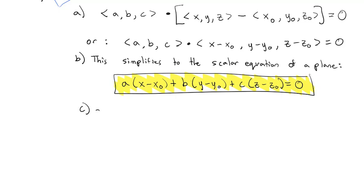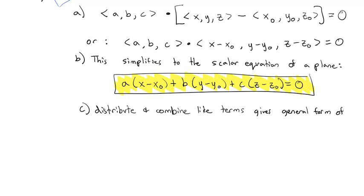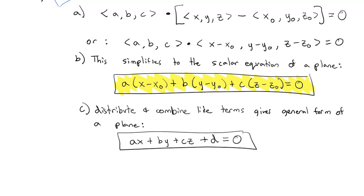Now, I could go one step further and distribute and combine like terms to get rid of the parentheses. This gives what we call the general form of a plane. When we distribute, we get ax, by, cz, and then all the constants add together to give d equals zero — so the general form is ax + by + cz + d = 0.